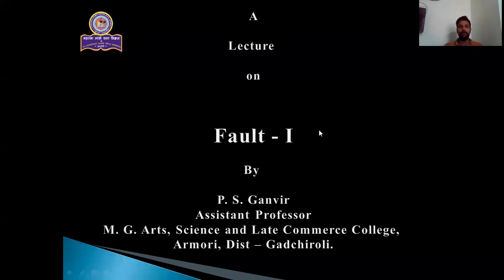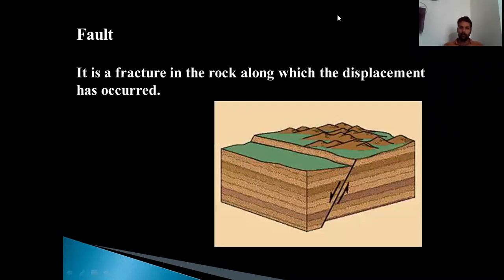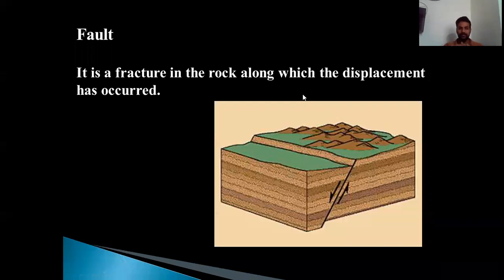Formation of fold or fault ultimately depends upon the stress applied, and at the same time it also depends on the nature of the rock which is subjected under the pressure. So, a fault is a fracture in the rock along which displacement has occurred. If there is no displacement, we will call it a fracture. But if there is a displacement along this fracture, then such a fracture can be termed as a fault.